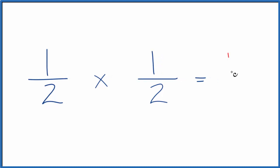One times one is one, and then two times two, that gives us four. So one half of one half, that's one fourth.